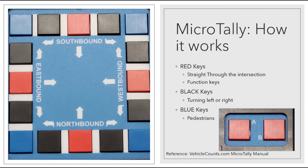The Micro Tally individually records all keys that are pressed and the time they were pressed. When recording, the Micro Tally gives the operator feedback in the form of audible beeps, or a flashing LED light for silent mode, for each key pressed. There are up to three different pitch beeps to indicate red keys, black keys, and blue keys, and a separate tone for the A and B keys. In a turn movement study, the keys are color-coded: red for straight through, black for turning left or right, and blue for pedestrians. There are also small raised bumps adjacent to the red keys to aid in locating the buttons without having to look down.